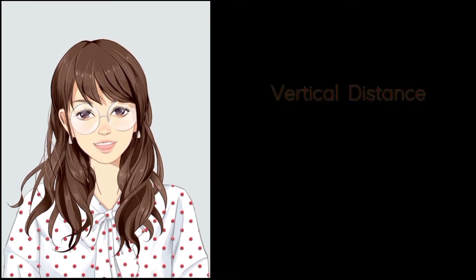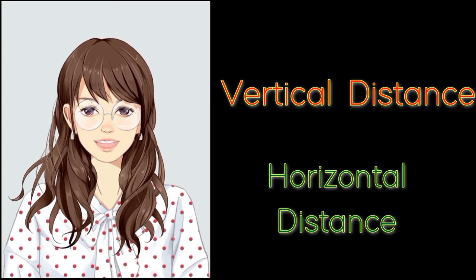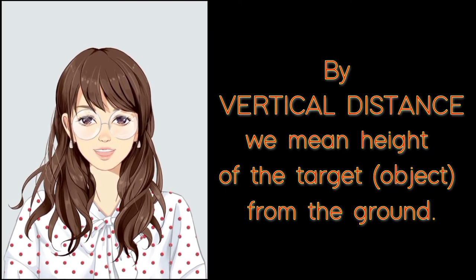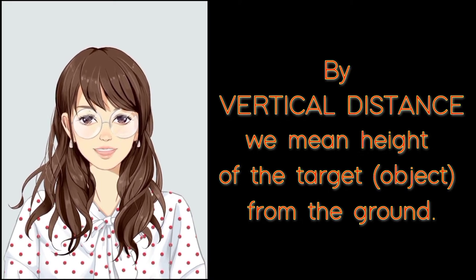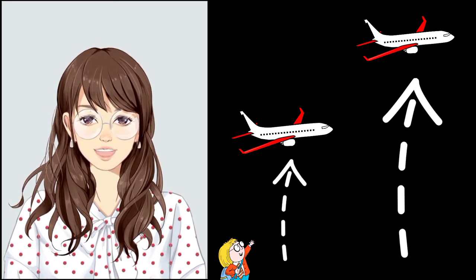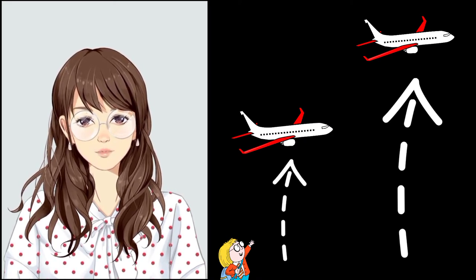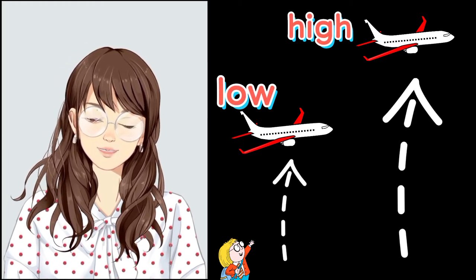Hi kids! For today, let's talk about vertical distance and horizontal distance. By vertical distance, we mean the height of the target from the ground. To tell the vertical distance of an object from the observer, we can use the words high or low.